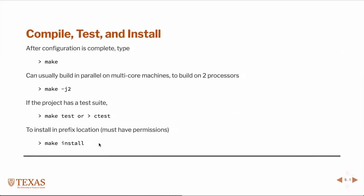After you generate the makefiles, you can go ahead and build the project with make. If you have a multi-processor machine, you can use something like make -j2, which would build on two threads or two processors. If the project has a test suite, the next step would be to run make test or ctest — CMake has a built-in test runner. The last step would be to install the actual libraries, header files, and executables into the location you specified.